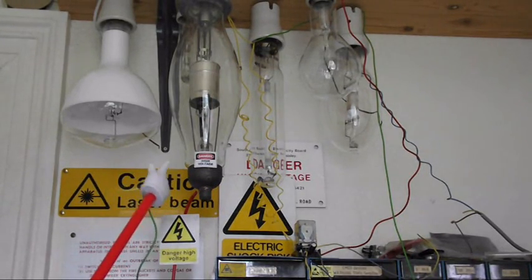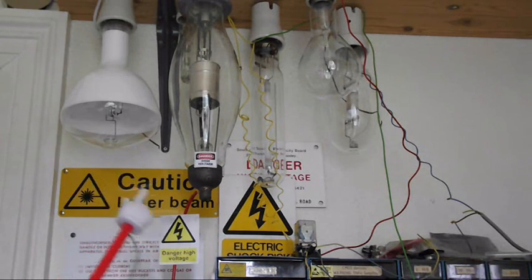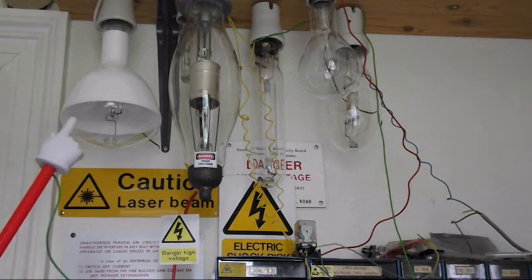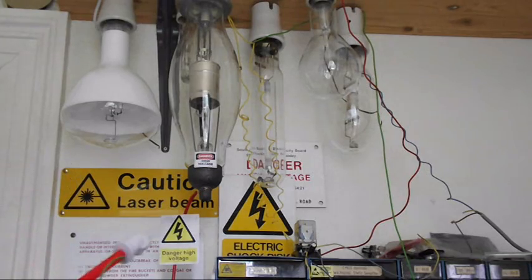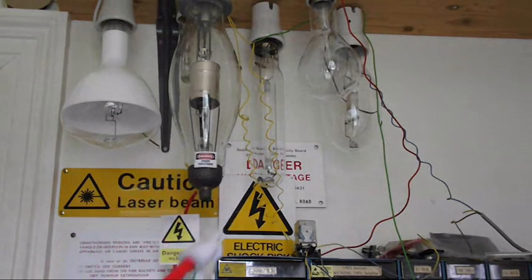Hi, this is a thing called a Kenetron. It's from World War II radar as far as I know. I've got it hooked up to a supply of 10,000 volts on the anode.